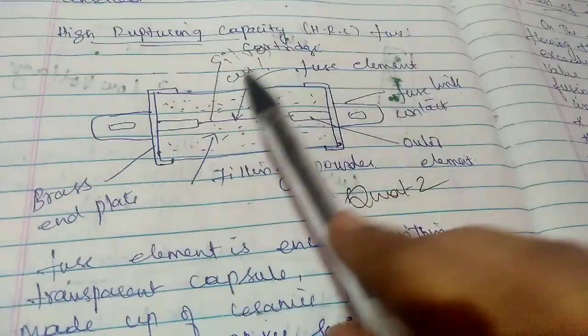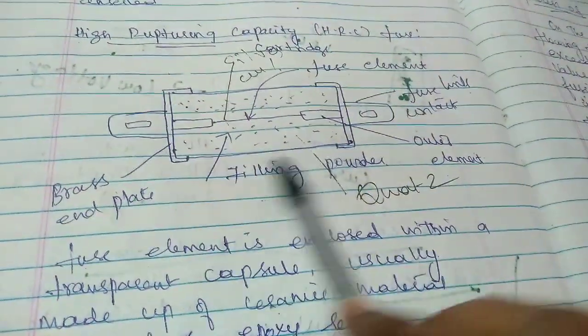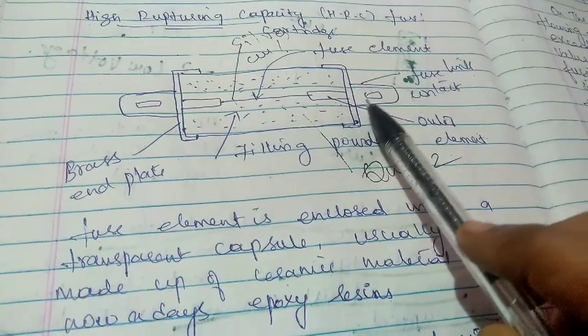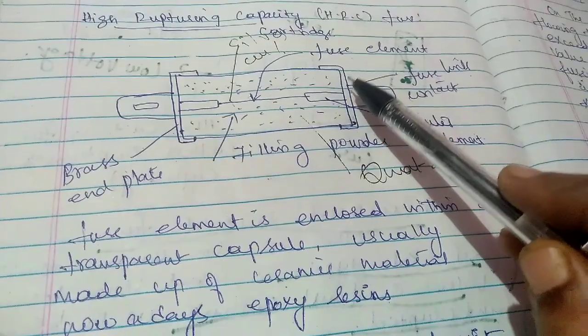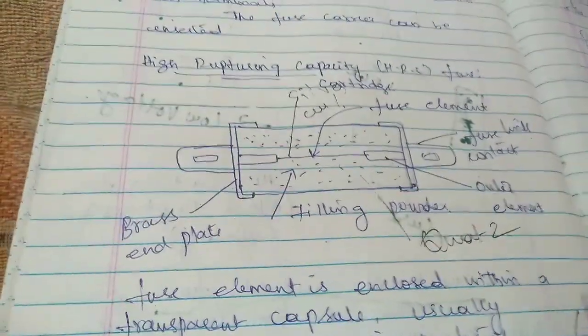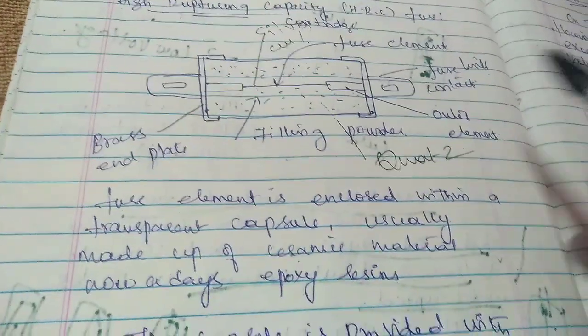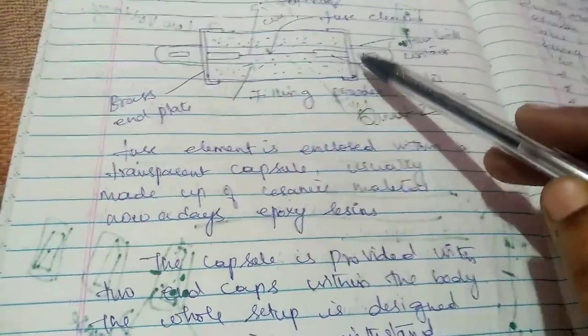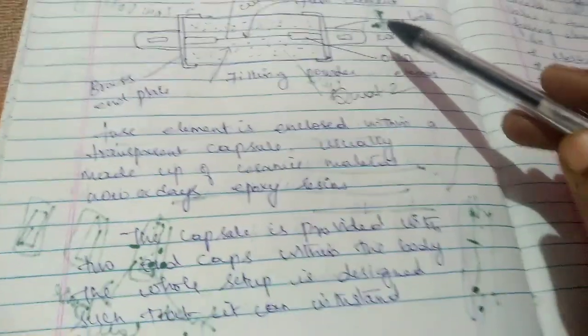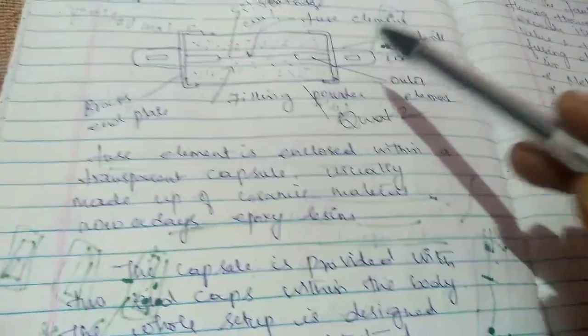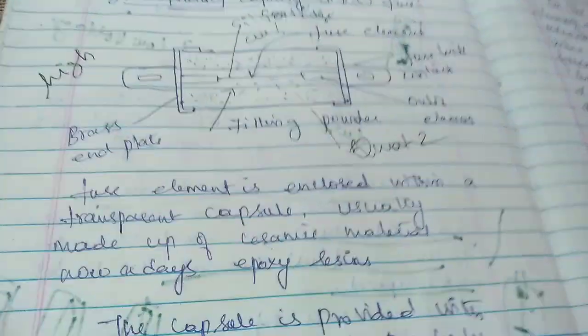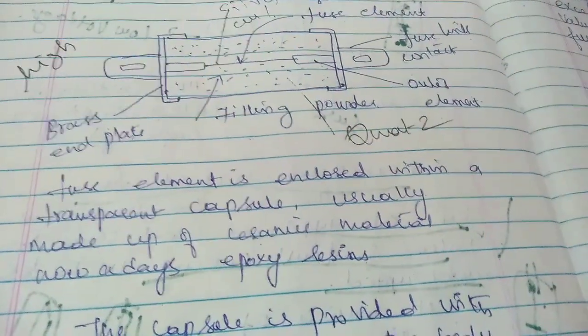This fusing element is enclosed within a transparent capsule which is made up of ceramic material. Nowadays they are using epoxy resin as the material. This capsule is provided with two end caps, and the whole setup is designed such that it is capable of withstanding very high pressure which would be produced at the time of short circuit current.